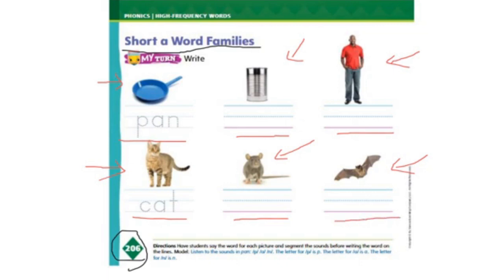So we have pan, can, man — and cat, rat, bat. Okay, thank you for watching. See you next lesson.